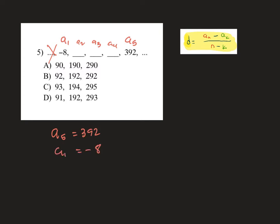What I need to find is that common difference so that I can figure out what the middle terms are. So I'm going to throw those two numbers into my formula. D equals 392 minus negative 8. Be very careful with that addition there. It's really 392 plus 8. And then on the bottom, we're going to do position 5 minus position 1. So this is 400 divided by 4. Last time I checked, that was 100.